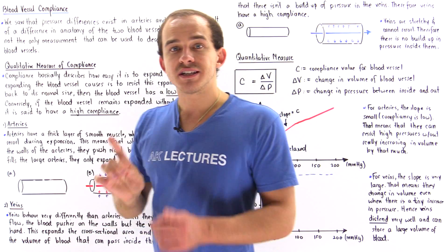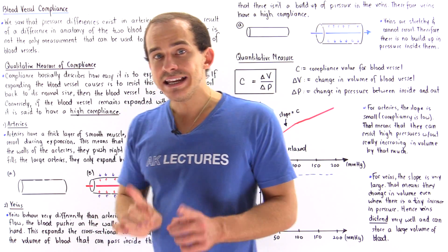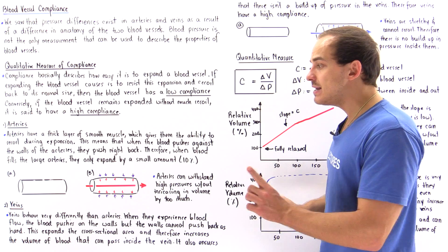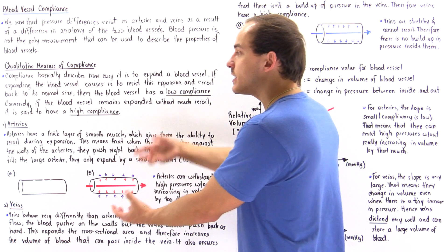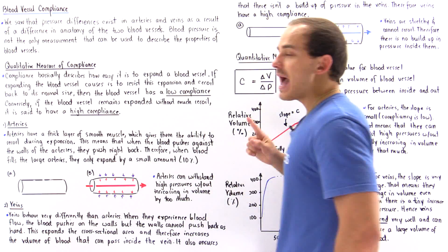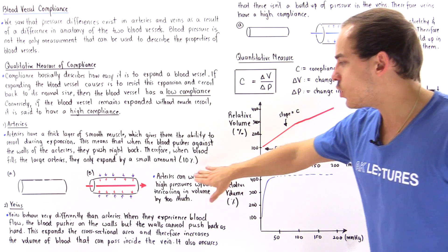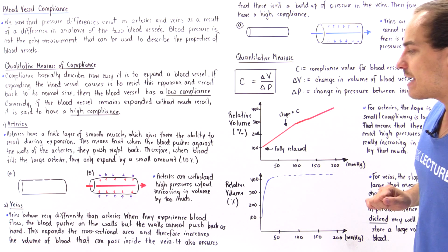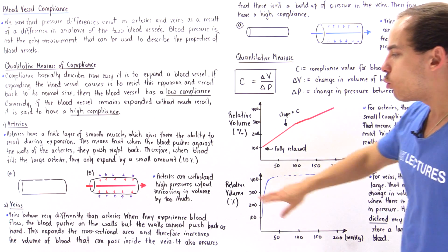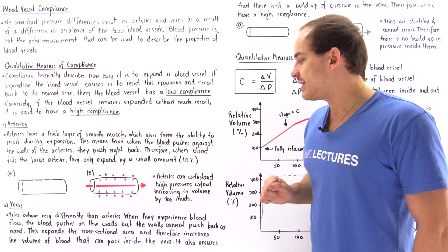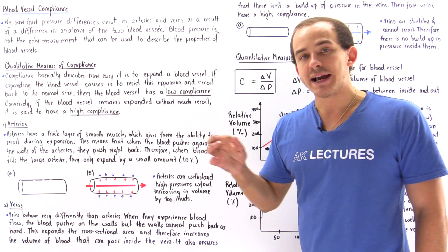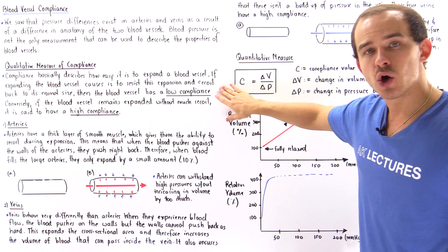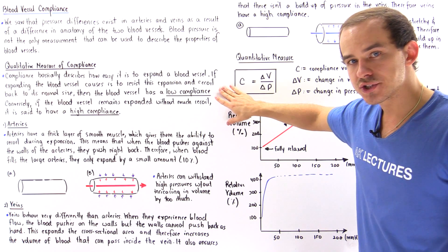A very high pressure is actually needed to expand our arteries. So arteries can withstand high pressures without increasing in volume by too much, meaning they have a low compliance.